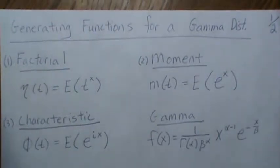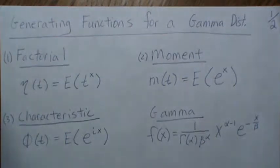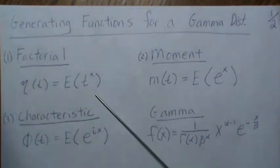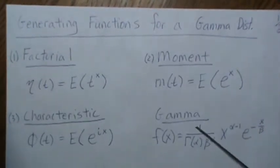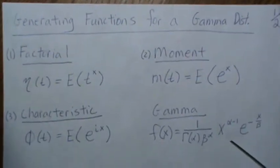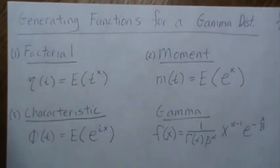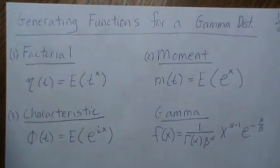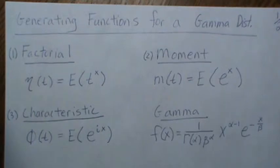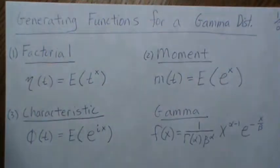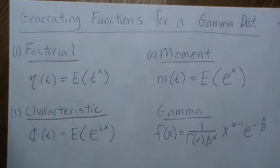In this video we're going to derive the generating functions for a gamma distribution. We're going to look at the factorial moment generating function, the moment generating function, and the characteristic function for this gamma density. This is at the end of probably a 9 or 10 video mini series on these generating functions, and now I'm just going to do several examples until I don't feel like doing it anymore.